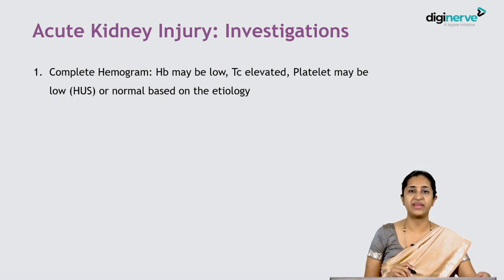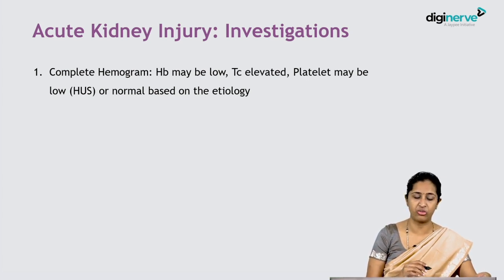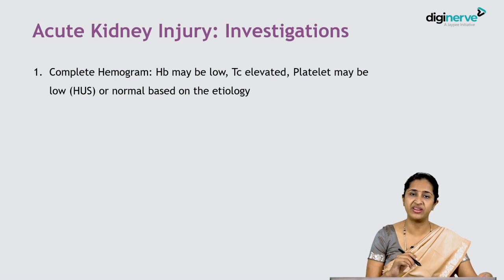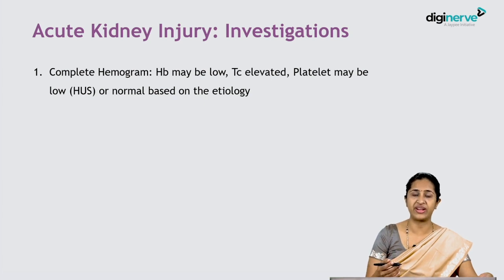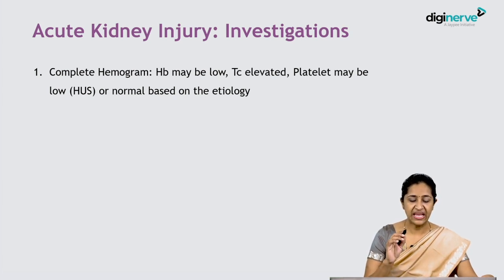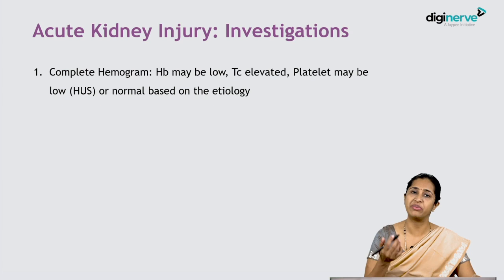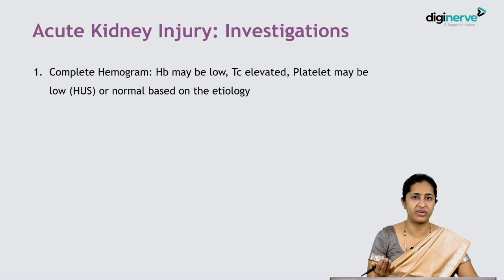To investigate a child with acute kidney injury, first do a complete hemogram. Hemoglobin may be low — especially in hemolytic uremic syndrome with microangiopathic hemolytic anemia. Total leukocyte count can be elevated in sepsis, dehydration, shock, glomerulonephritis, and tubulo-interstitial nephritis secondary to infection. Platelets may be normal in dehydration or shock, but low in sepsis, inflammatory causes, or hemolytic uremic syndrome, which always has thrombocytopenia.